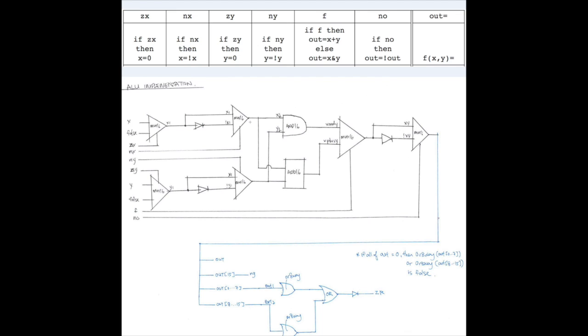So once our X has completed its journey and also the Y completed its journey, we're going to F and NO. And you can see here that for F control bits, it's using the multiplexer here to select either X plus Y or X and Y.